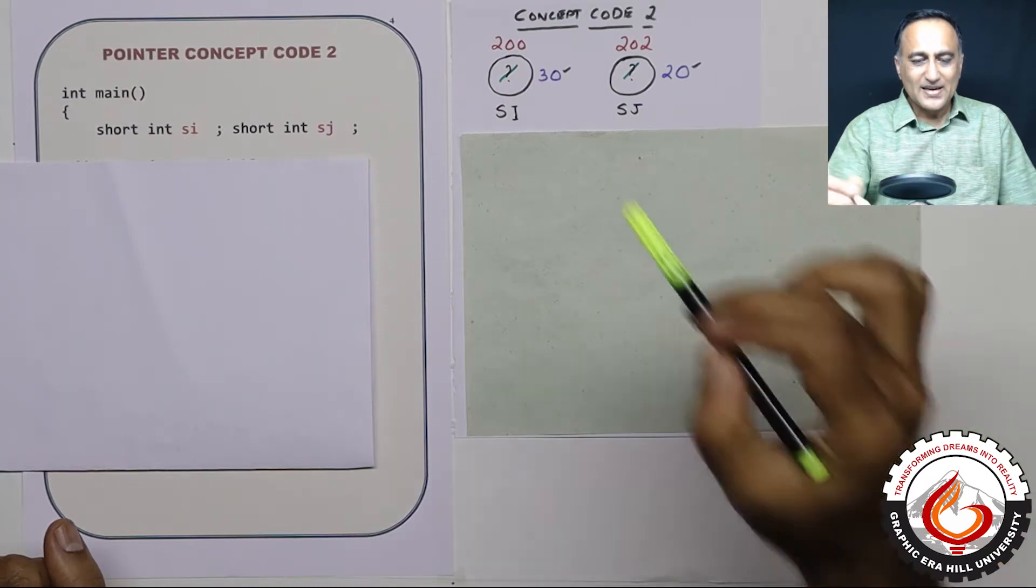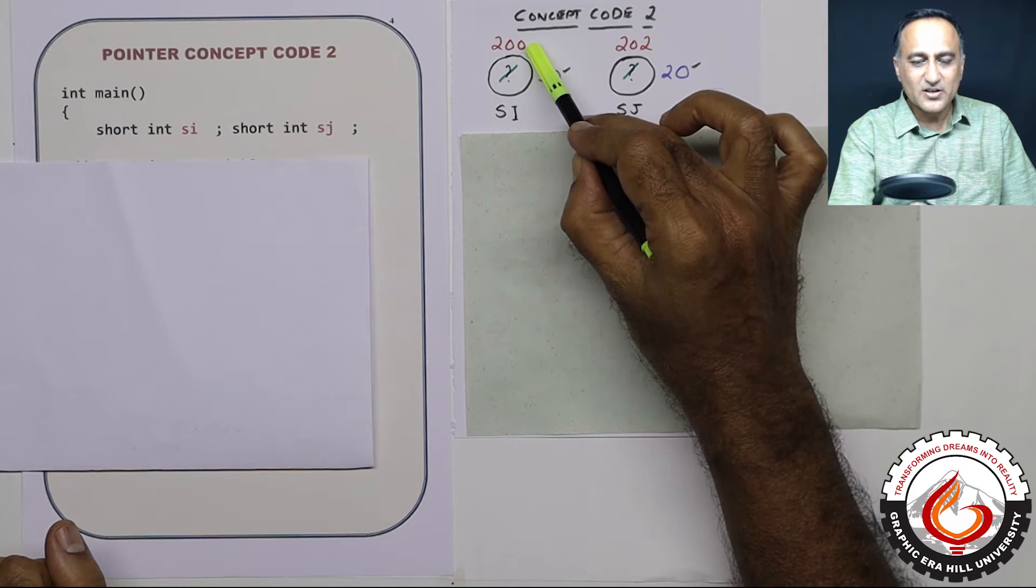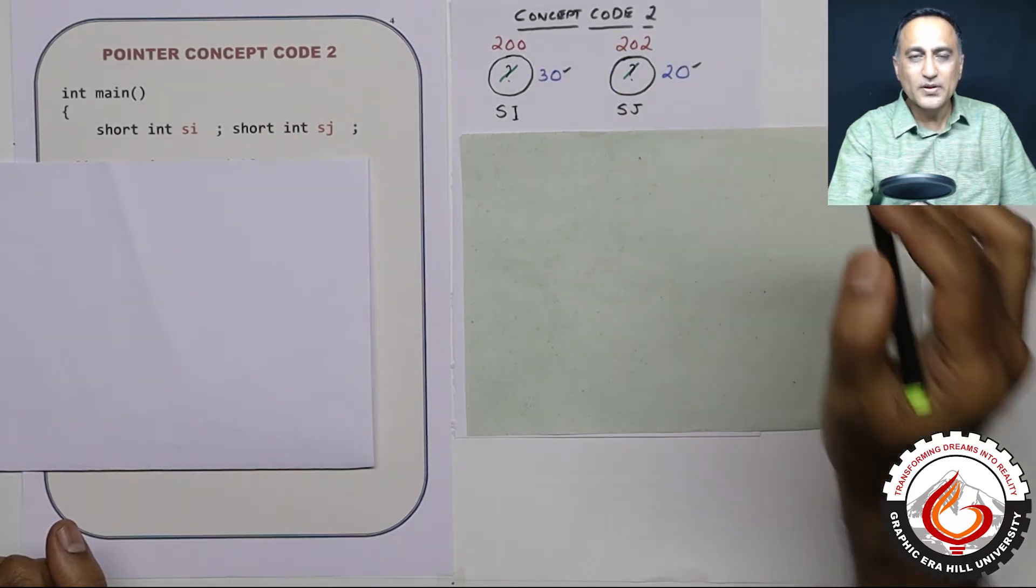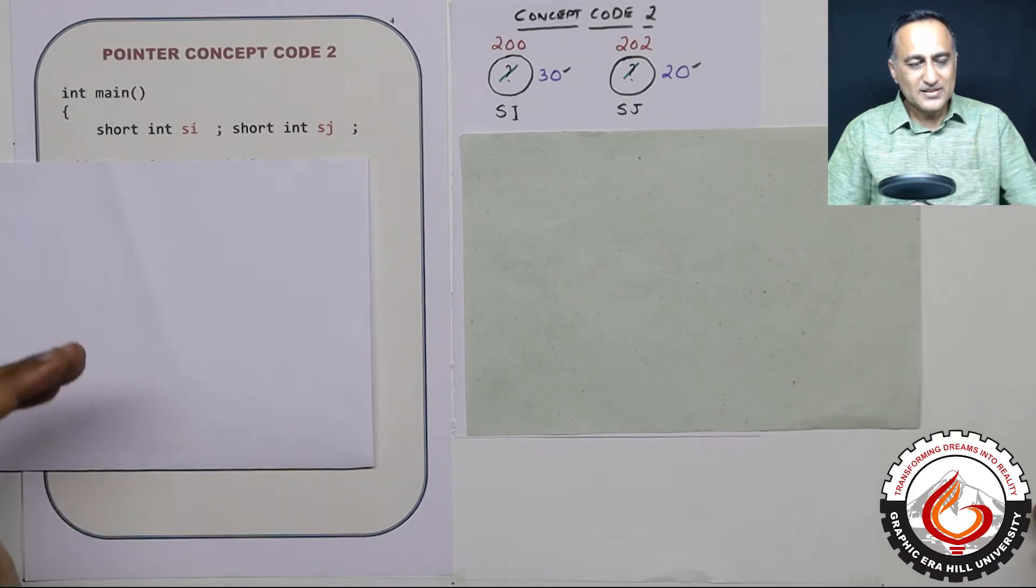Let us say si resides at address 200 in the memory, and sj resides at address 202 in the main memory. This clarifies our understanding of the declaration.